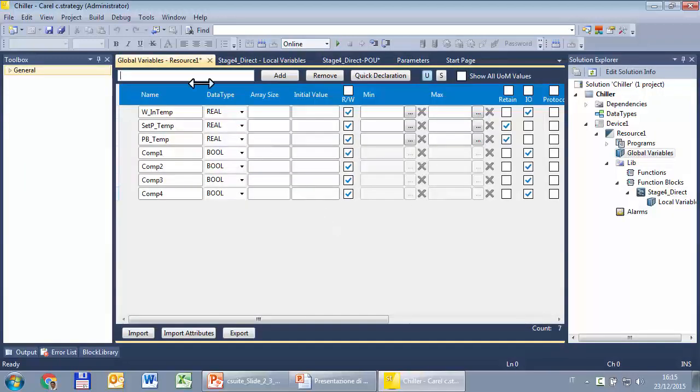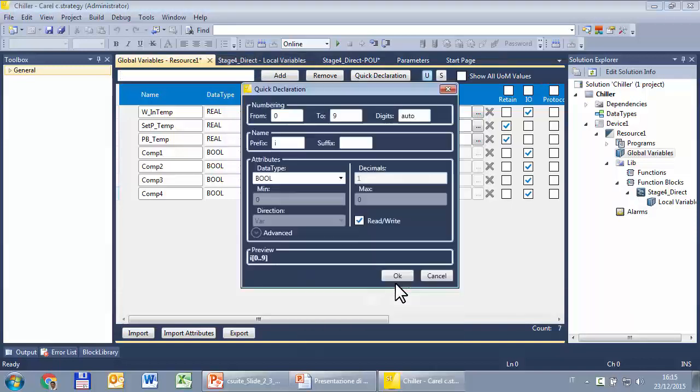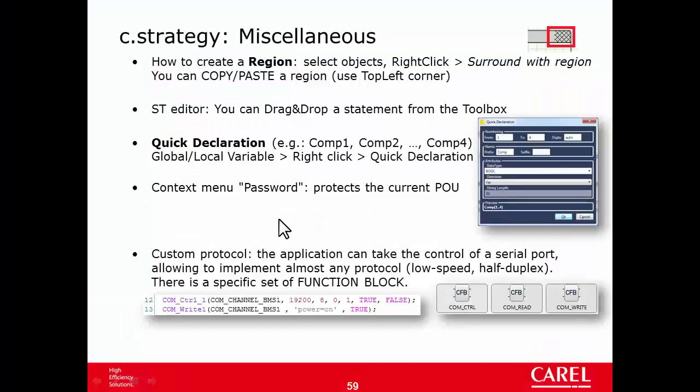The other is the quick declaration. This is something available in the global variables as well as in the local variables. Right click the background, quick declaration. You can specify a prefix, a suffix. If you fill in all other properties, then OK. And quickly you can create similar variables.